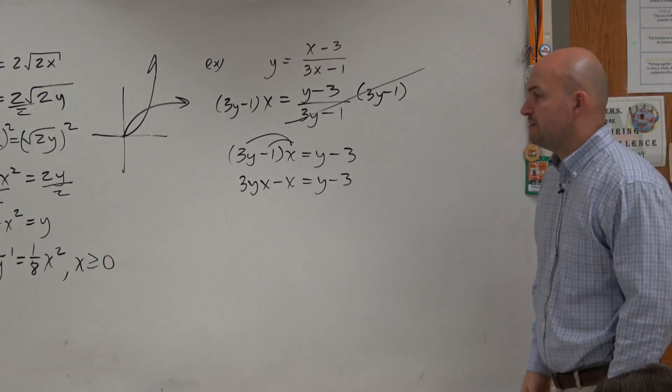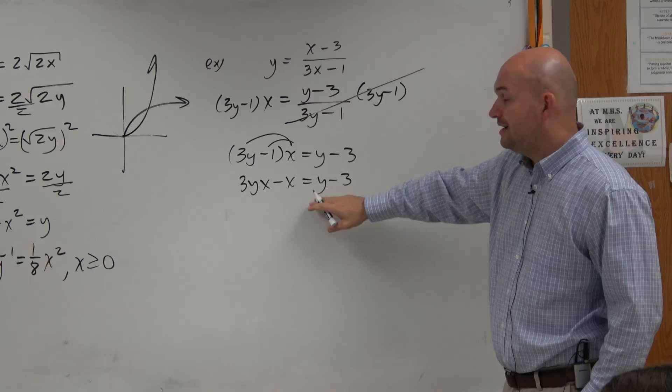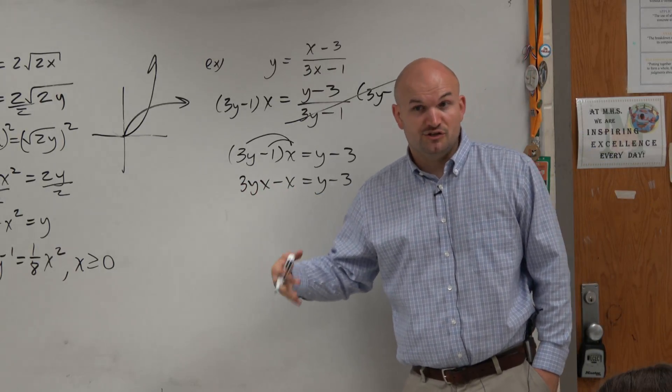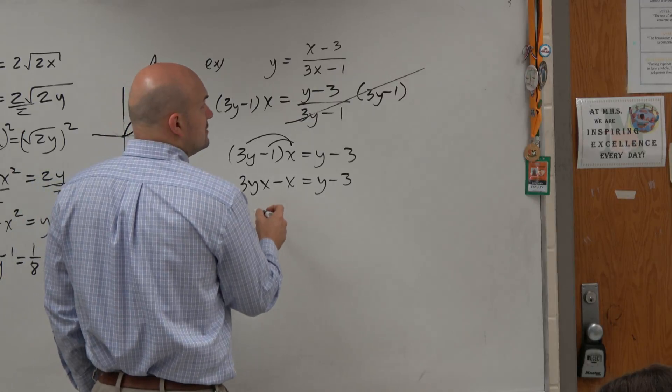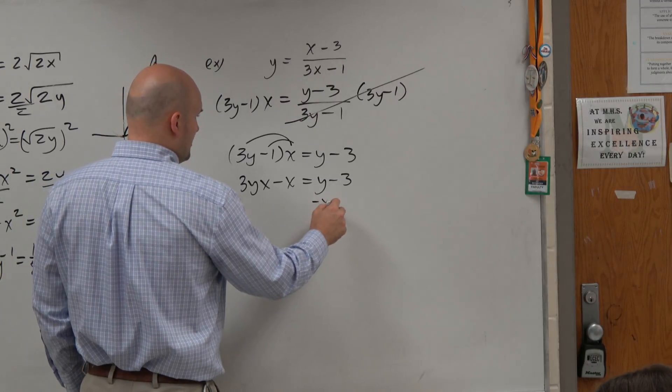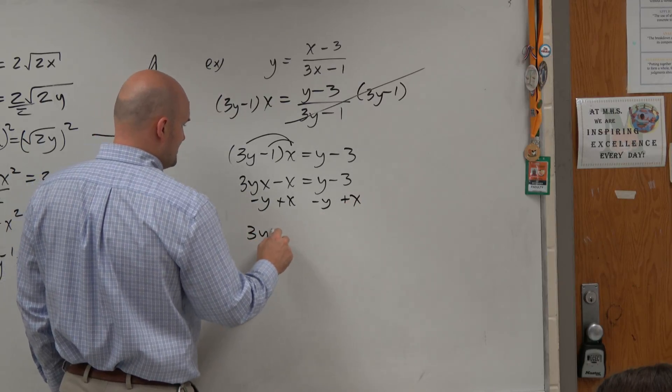Oh, I totally forgot to talk about the domain range. We'll talk about it on this one. So now, I still have a variable on both sides. You've got to get the variables on the same side. So let's subtract the y on both sides, and let's add the x on both sides. I'm going to combine my steps.